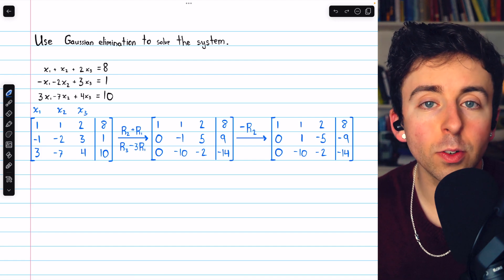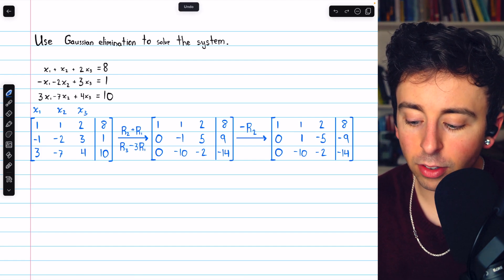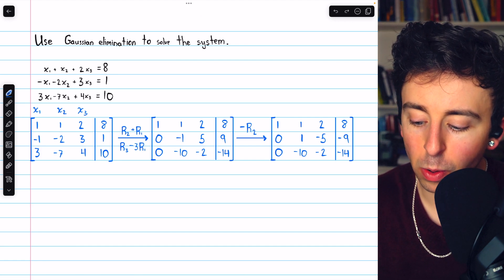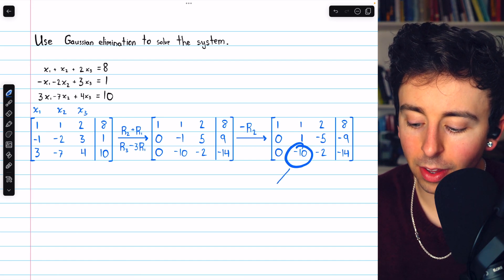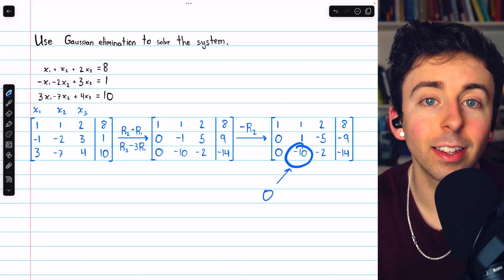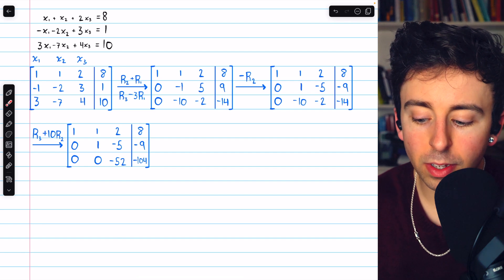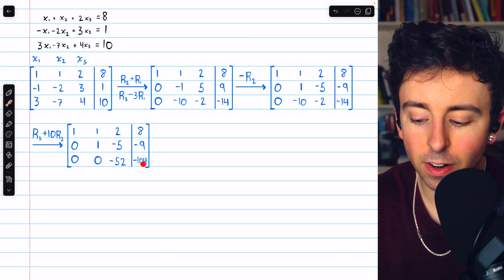Now we want to introduce zeros below this leading one so we'll add ten copies of row two to row three so that this negative ten will become a zero. So adding ten copies of row two to row three we get here.